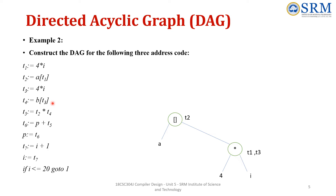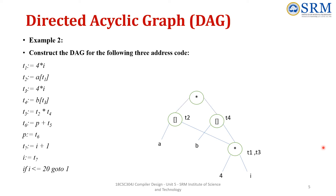Next is t5 = t2 * t4. Already we have t2 and t4, so create one operator node asterisk and connect it with t2 and t4. Label the node as t5. Next is t6 = p + t5. Already we have t5, so create a new node p and an operator node plus. Connect p and t5 with the plus operator, and label this node t6.